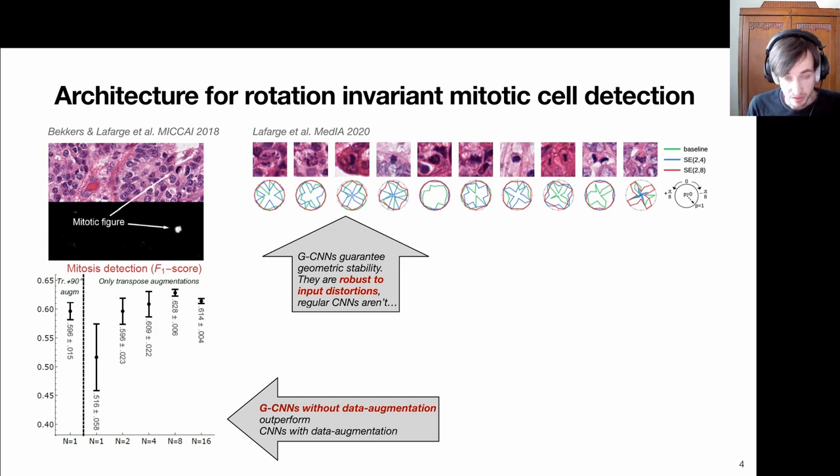Then we look at the proper discretization of group convolutions. You see that for all different rotations of the input, it keeps the label fixed.